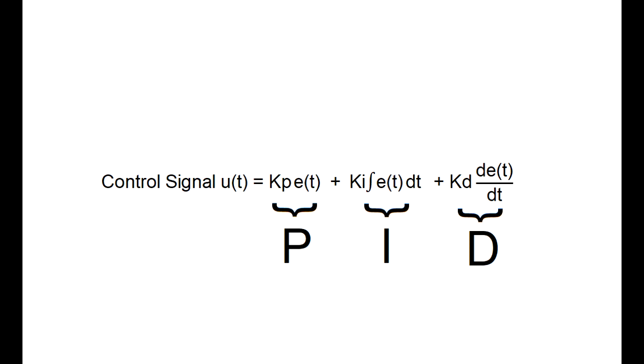You can see that each term has a constant in front of it. These are known as the tuning constants and are the essential design parameters that if chosen properly will allow the controller to output a control signal that will bring the error down to zero.